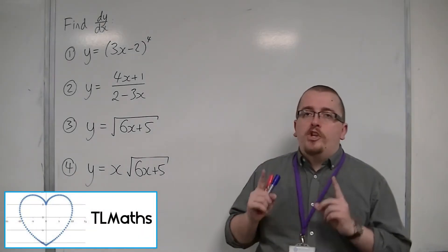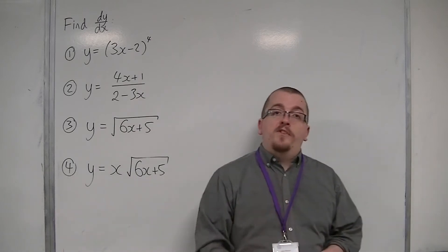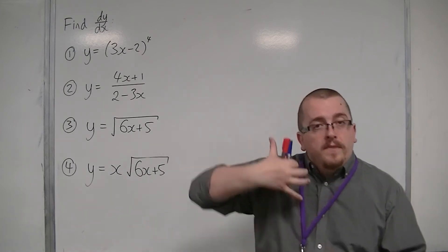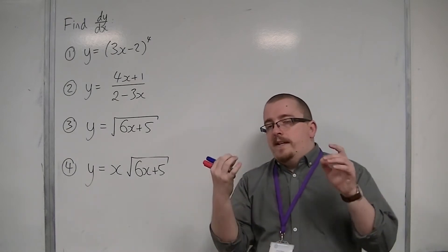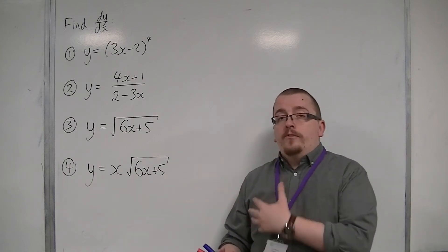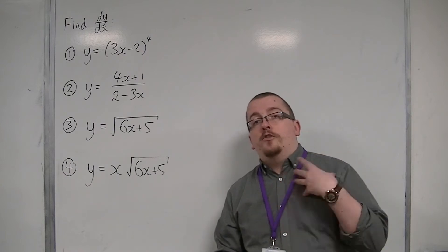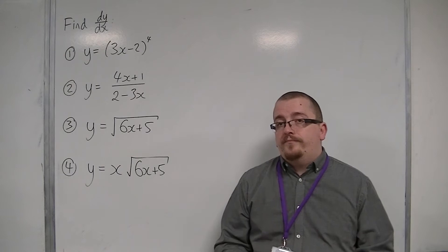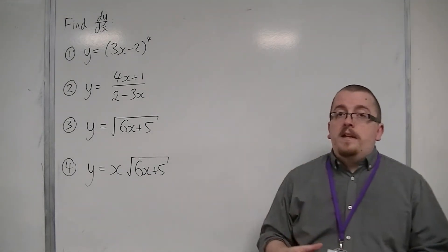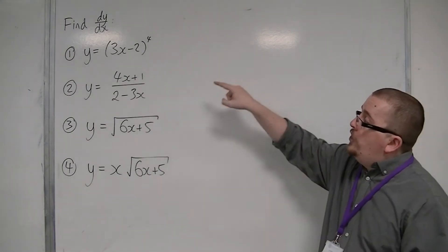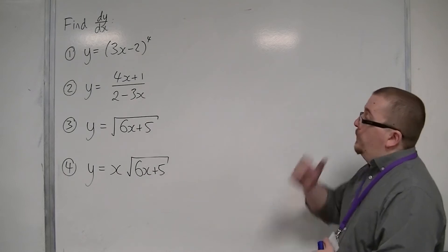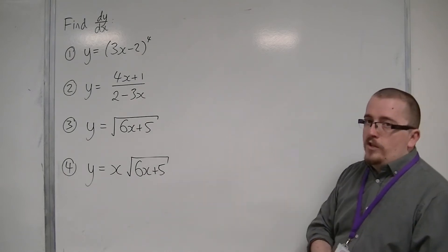We've gone through each of the differentiation rules piece by piece: chain rule, product rule, quotient rule. I've shown you essentially how they work, and then some examples for each. But really, when it comes down to it, would you be able to tell which of the rules you need to use in each situation? So if you weren't told to use the product rule, would you be able to tell just by looking at the question? That's really the point of this video. Here are four examples — maybe pause the video and think which of the three rules you'd use to differentiate each one, then press play when you're ready.